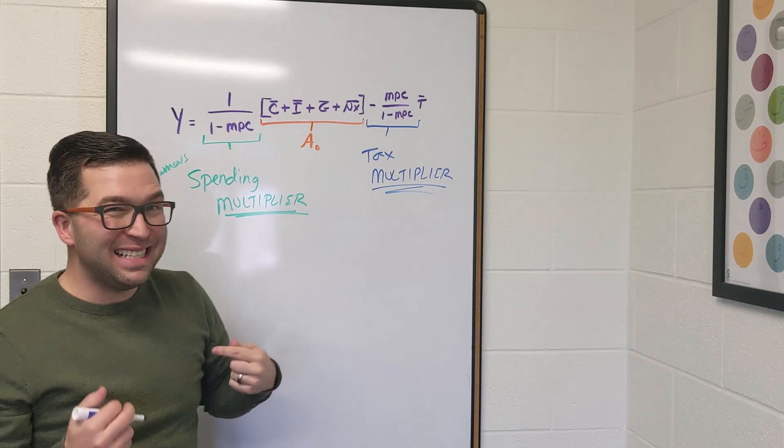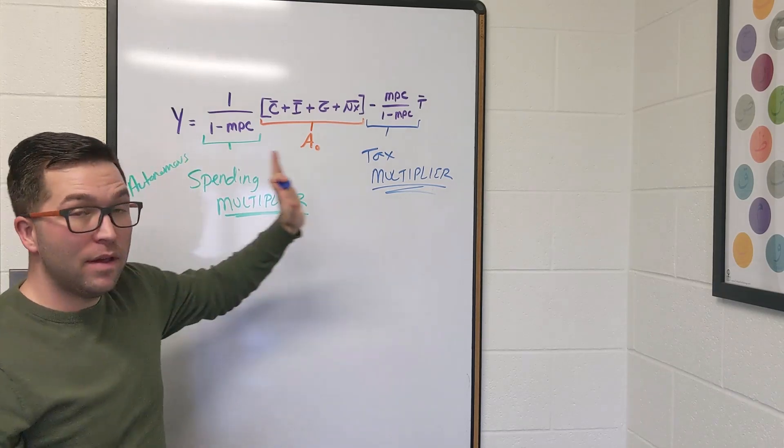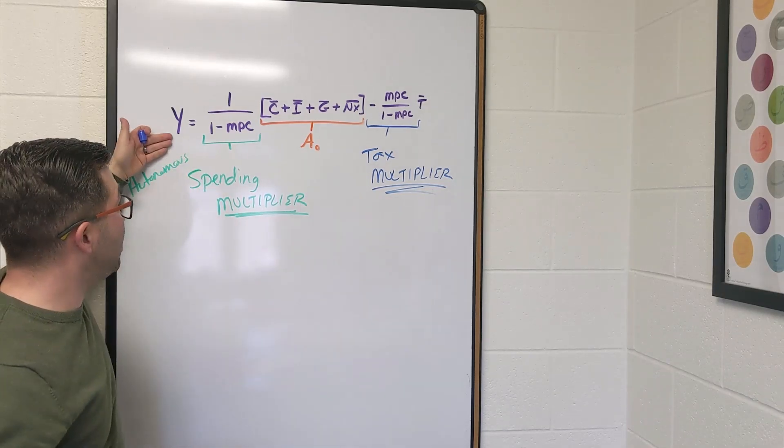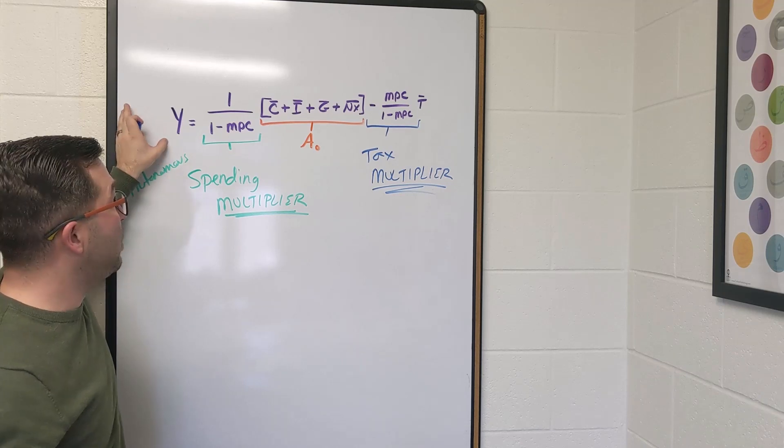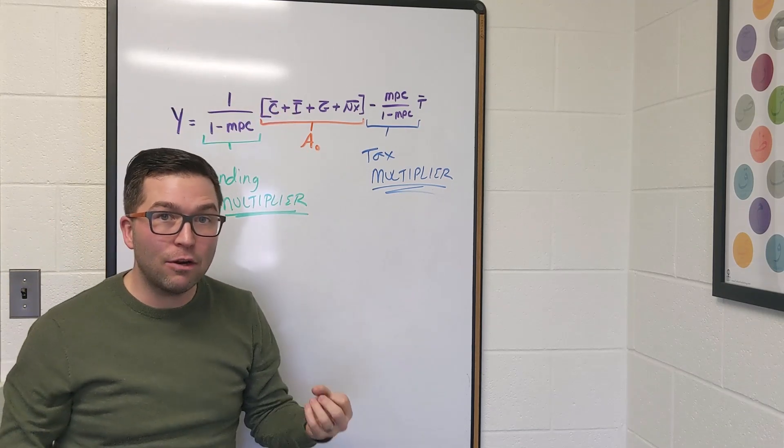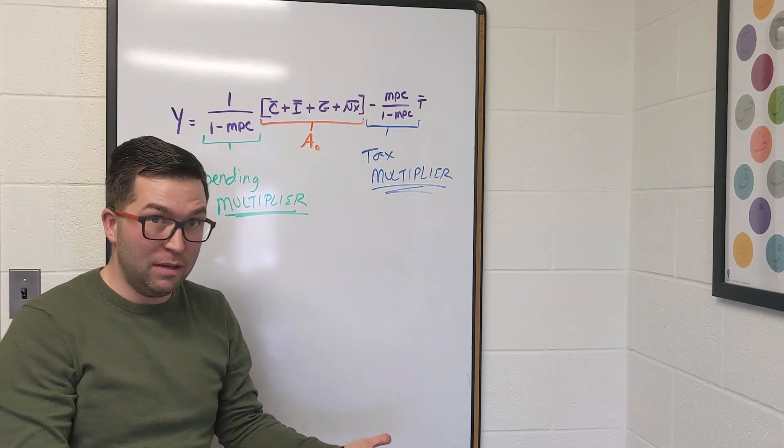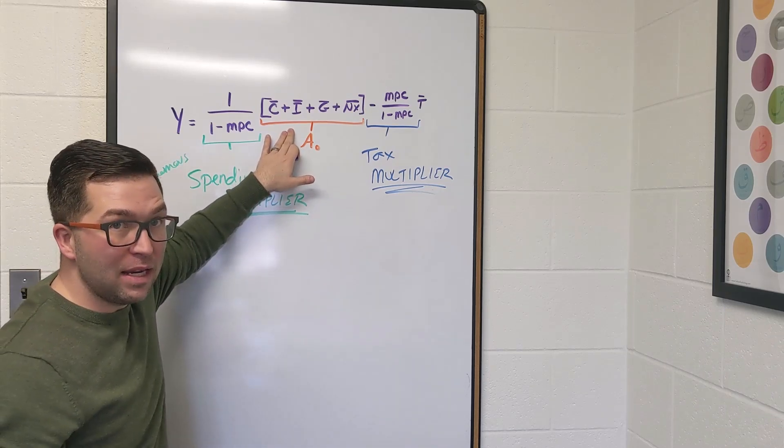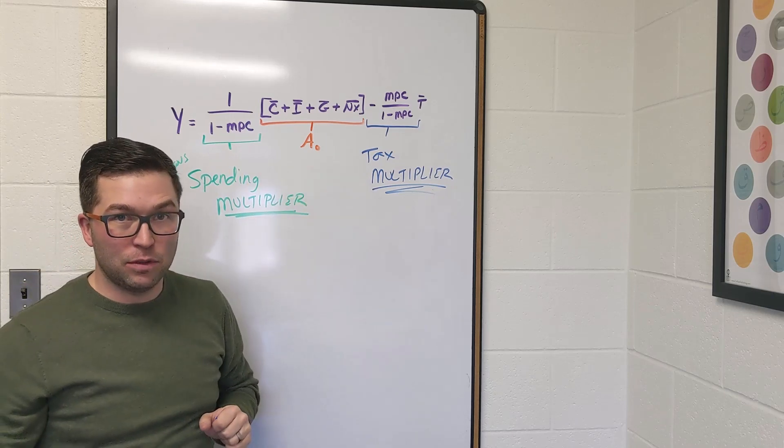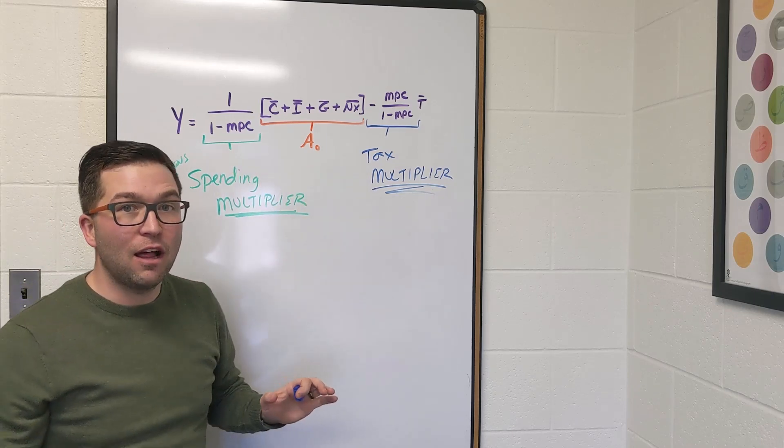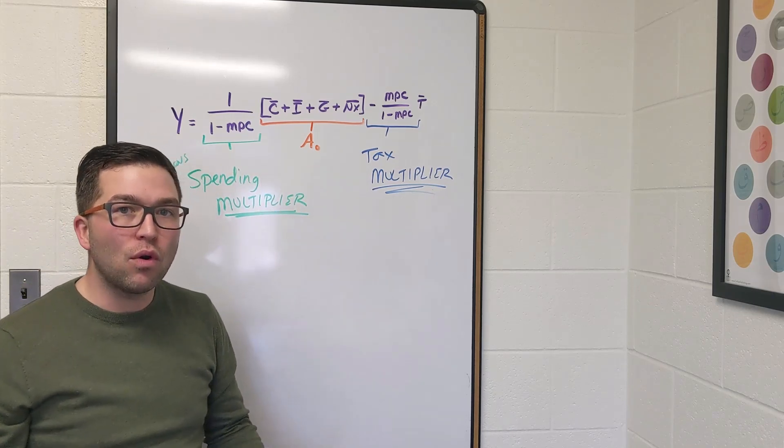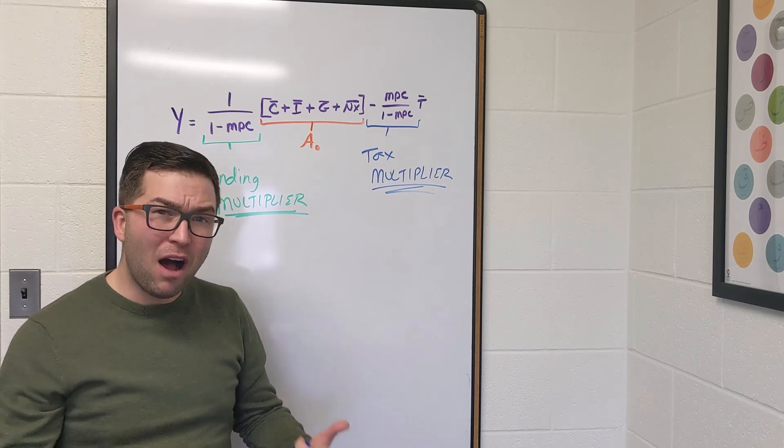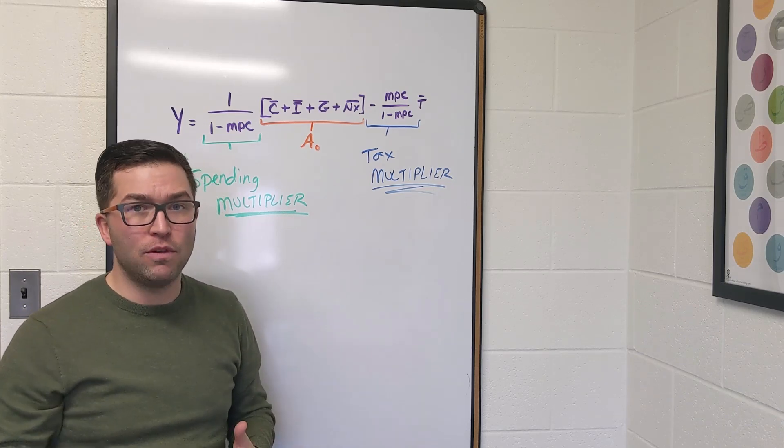So we have three different distinct parts of this equation. This represents the level of real GDP that puts this whole model into macroeconomic equilibrium where GDP equals aggregate expenditure. We have autonomous spending, we have the spending multiplier, and we have the tax multiplier. All this stuff is going to help us really explore the macroeconomy as a whole and policy as a whole as we move forward through this course.